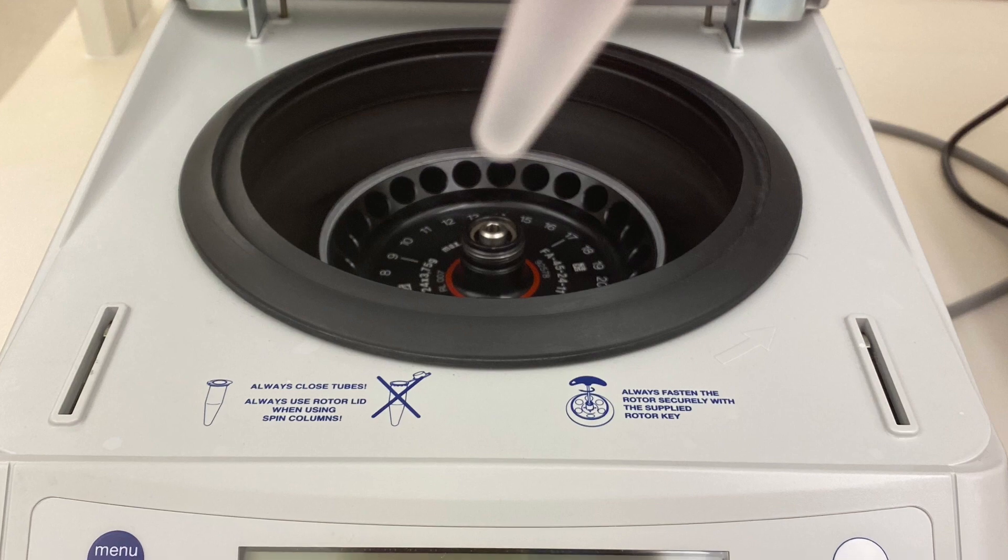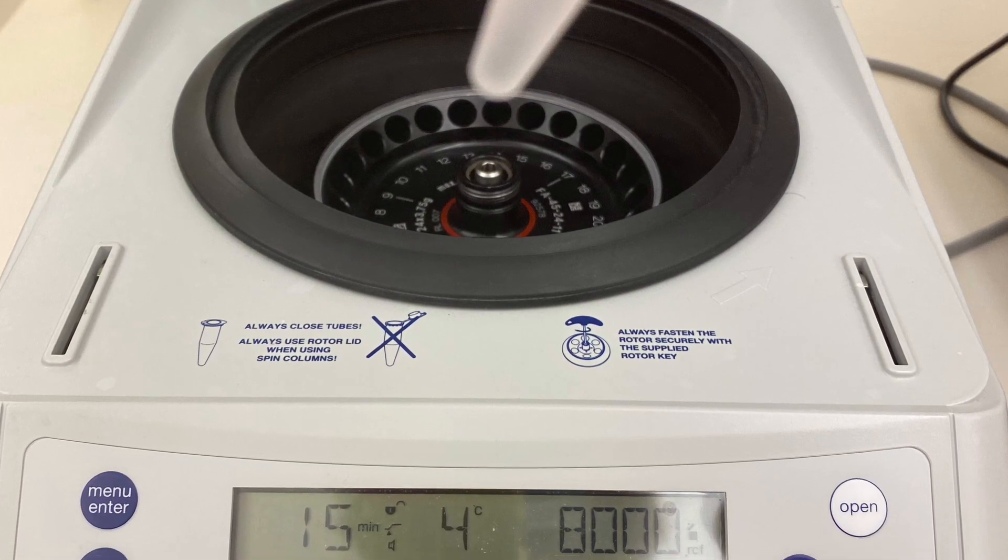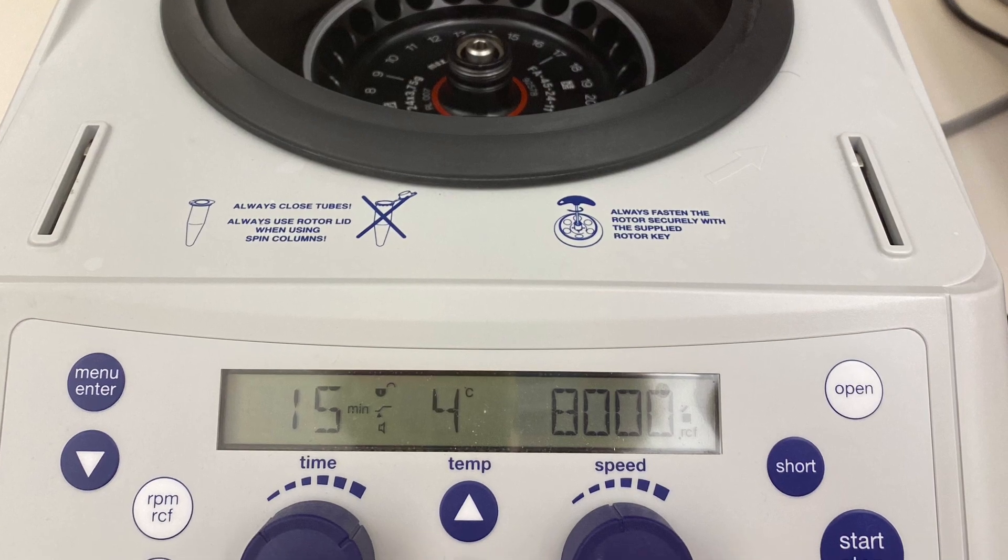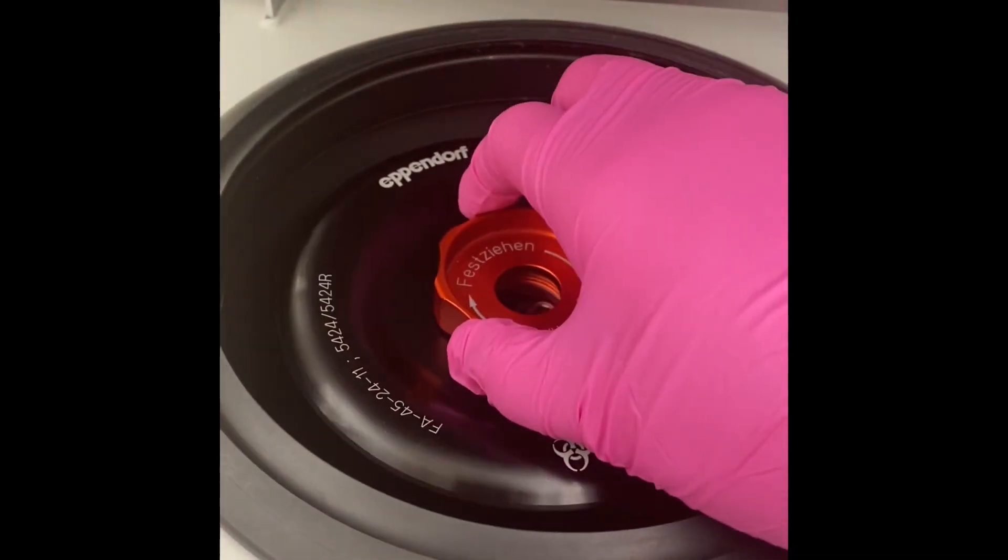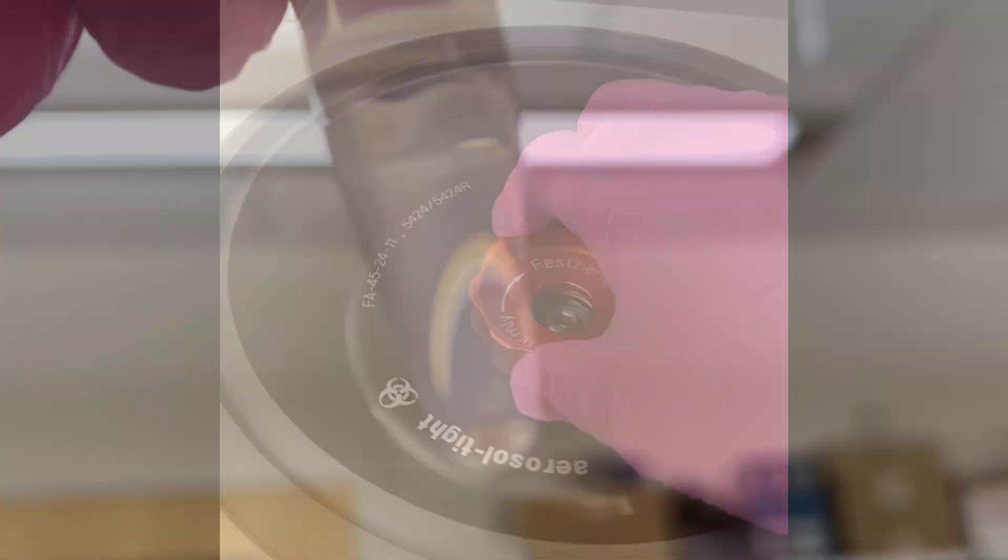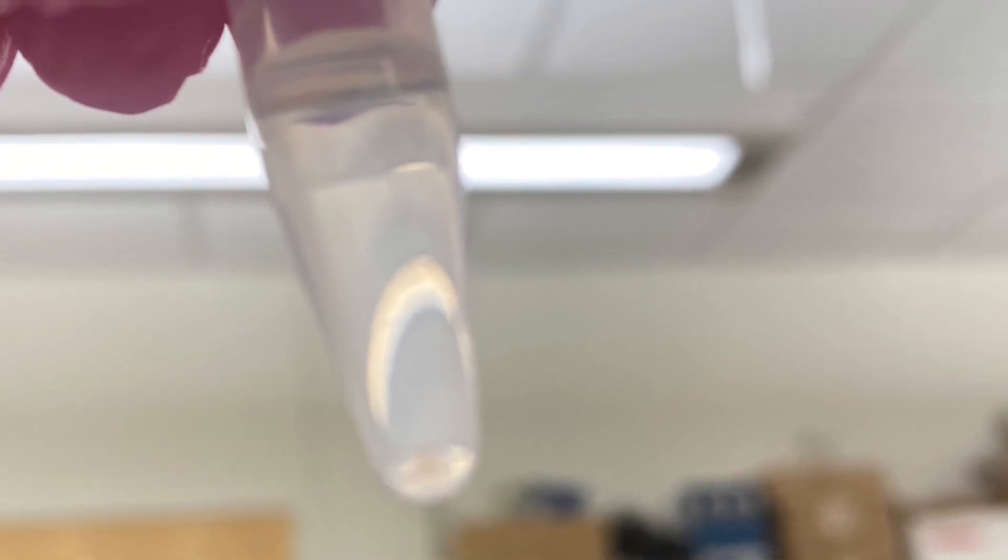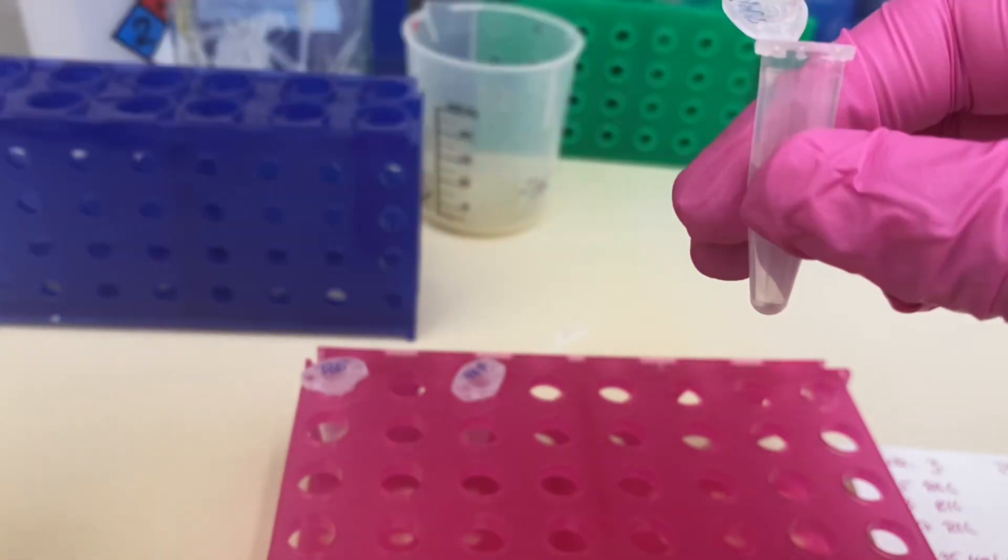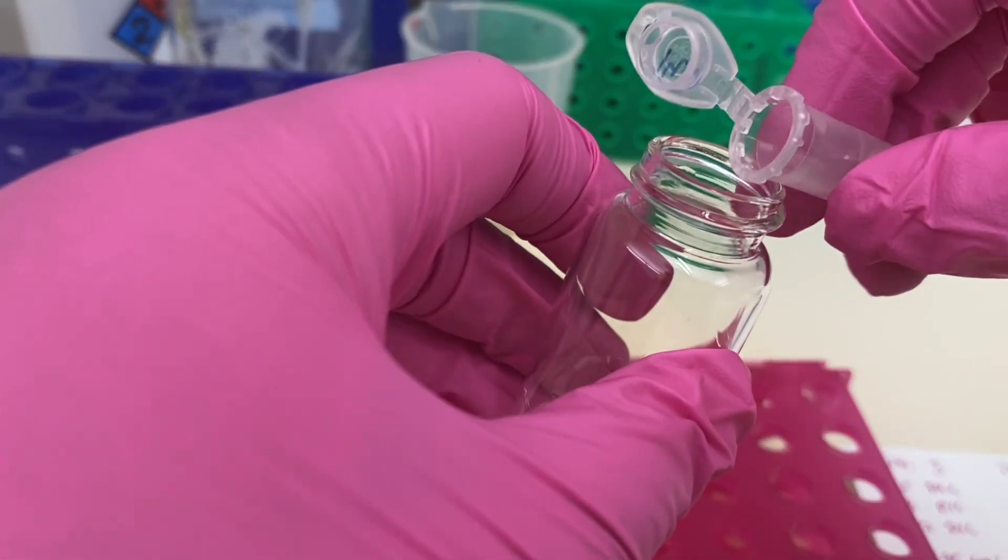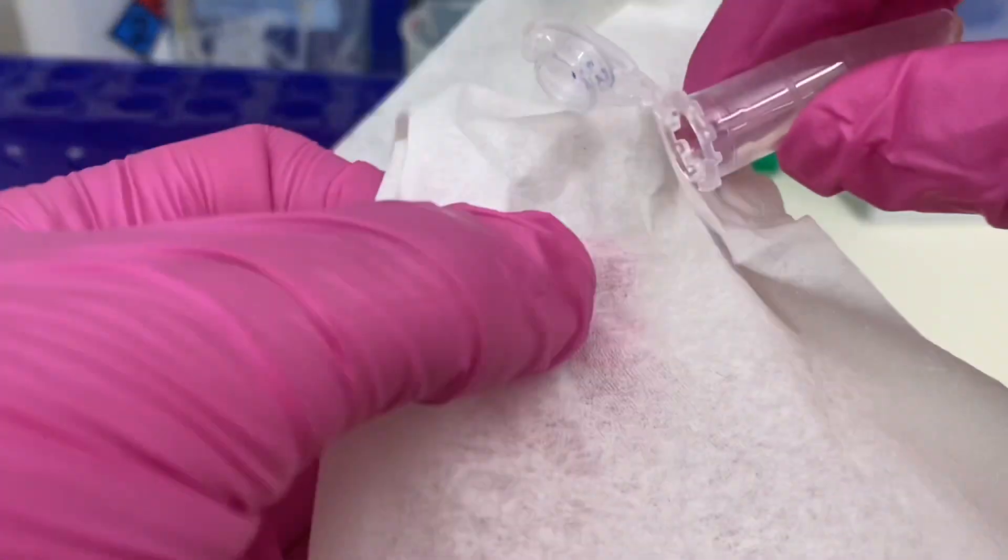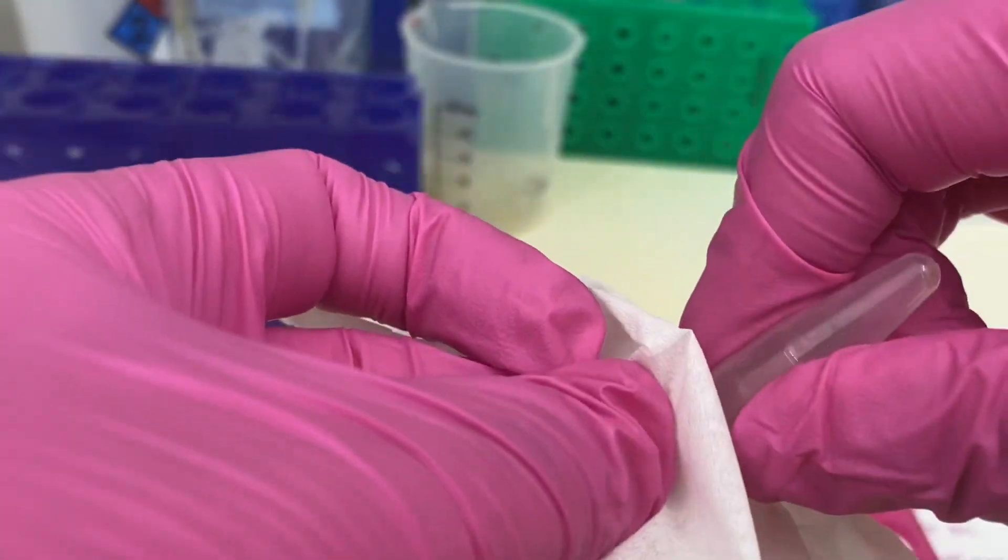The next day, I will have to centrifuge my samples at 8000 g for 10 to 15 minutes. That way I'm expecting my proteins to be in a pellet. As you can see here, it forms like a nice white pellet at the bottom. And after that, I will decant the acetone out really carefully not to disturb the bottom where the pellet is.